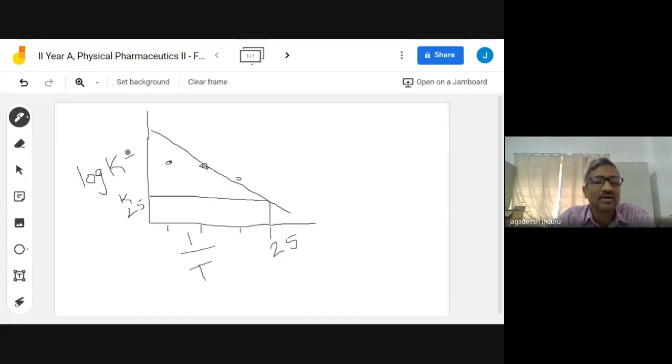So this value what you are going to get is log k25 plus 3. You want to determine the k25, that is the reason whatever value you got, minus 3 you are going to do it. Then you are going to get k25, antilog of that value you will get k25.